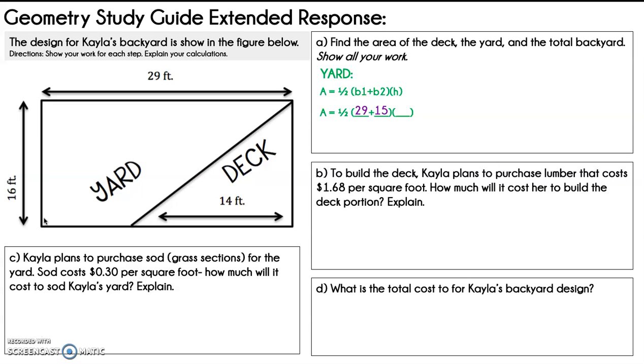Now we're looking for our height. Our height is from bottom to top of the trapezoid, which is 16 feet. So when I fill that in, I can just go from there and plug that into my calculator. Area equals one-half parentheses 29 plus 15 parentheses times the height, which is 352 feet squared. So there's my area for the yard.